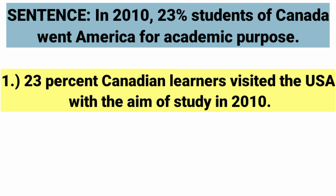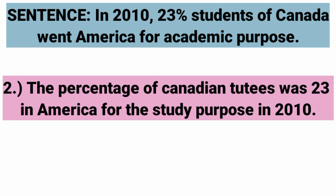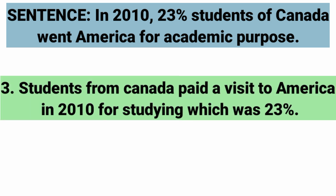Read the first sentence: '23% Canadian learners visited the USA with the aim of study in 2010.' Second: 'The percentage of Canadian students who went to America for the study purpose in 2010 was 23.' Third: 'Students from Canada paid a visit to America in 2010 for studying, which was 23%.' So above we discussed one base sentence, and these are three variations of it — written in different ways.